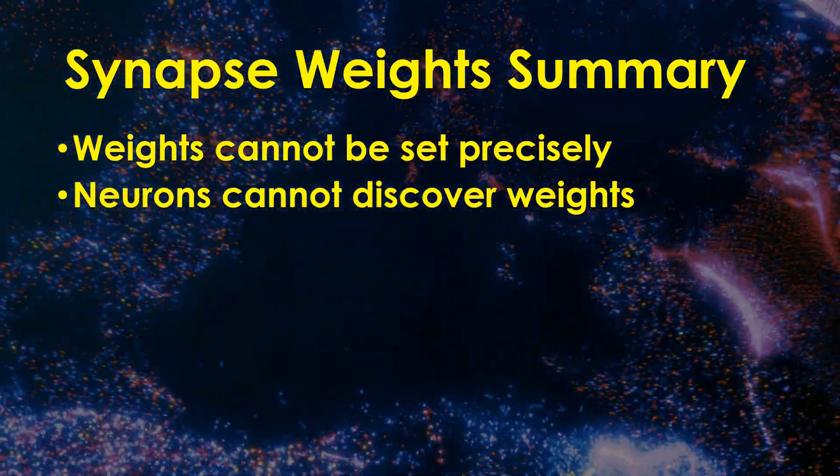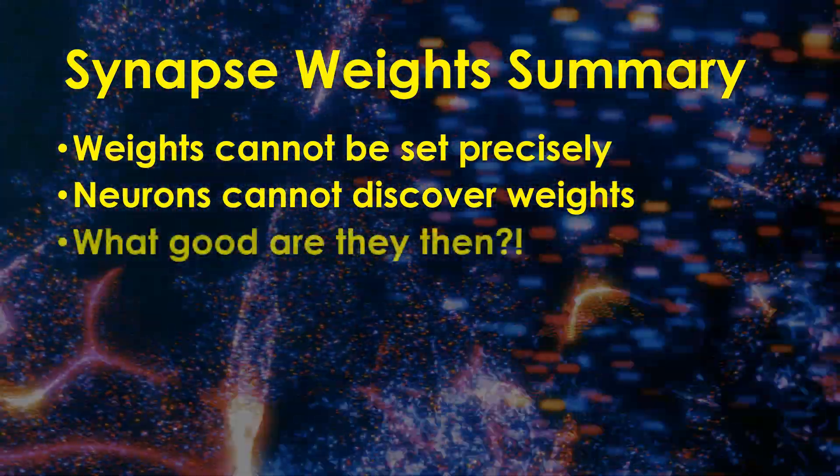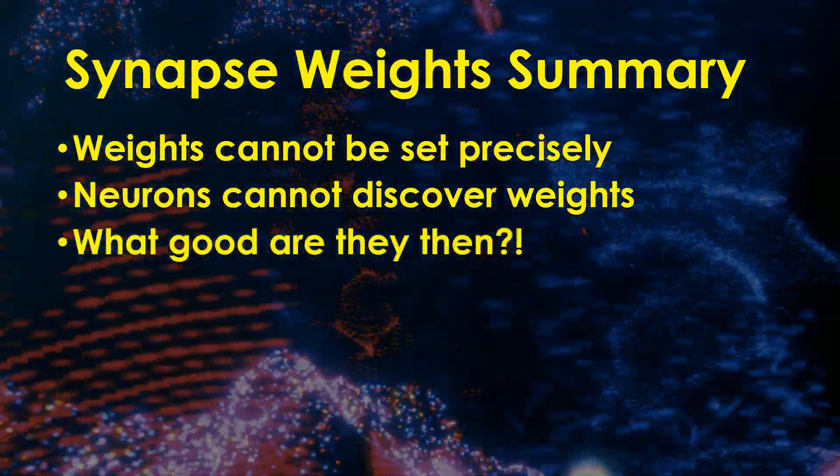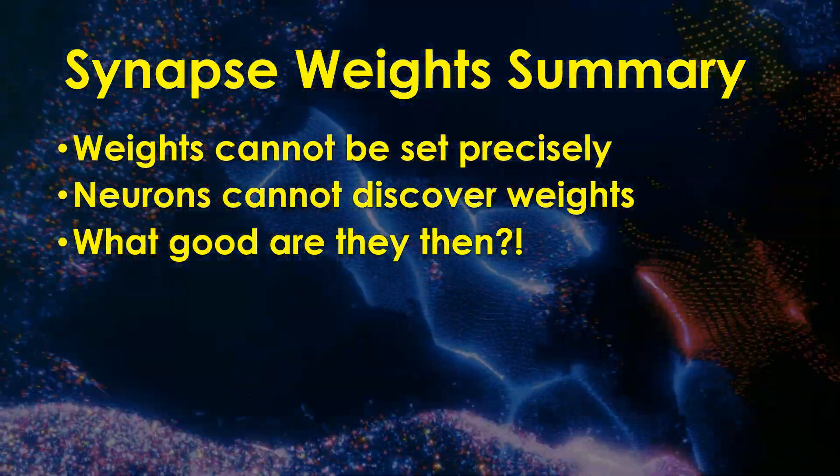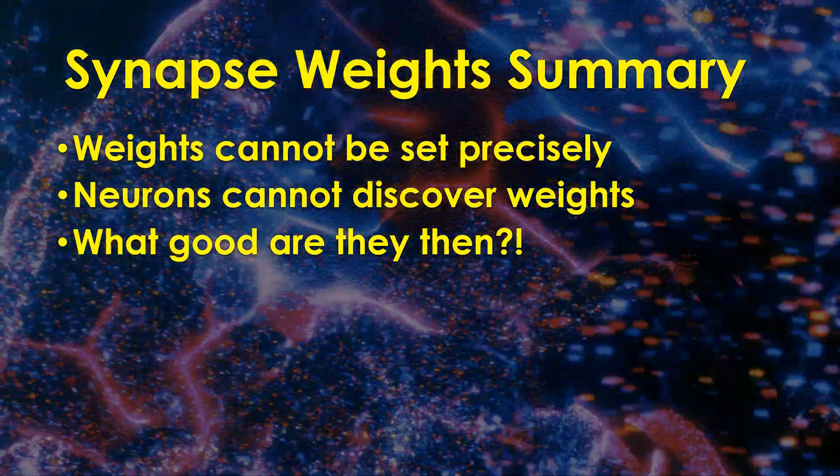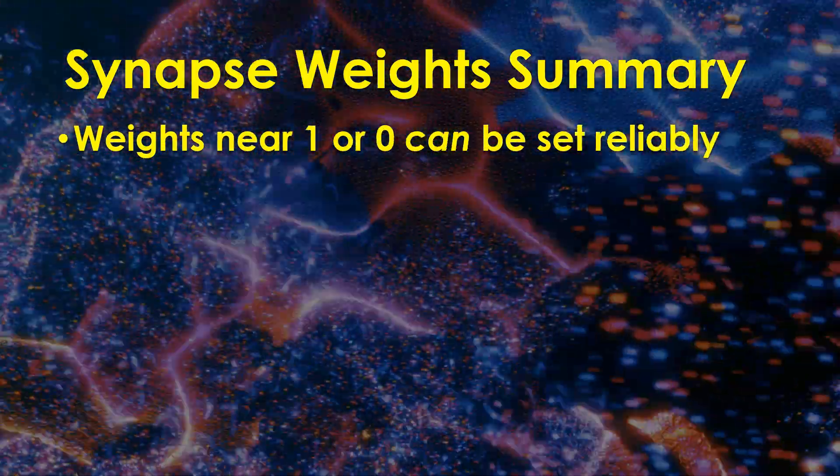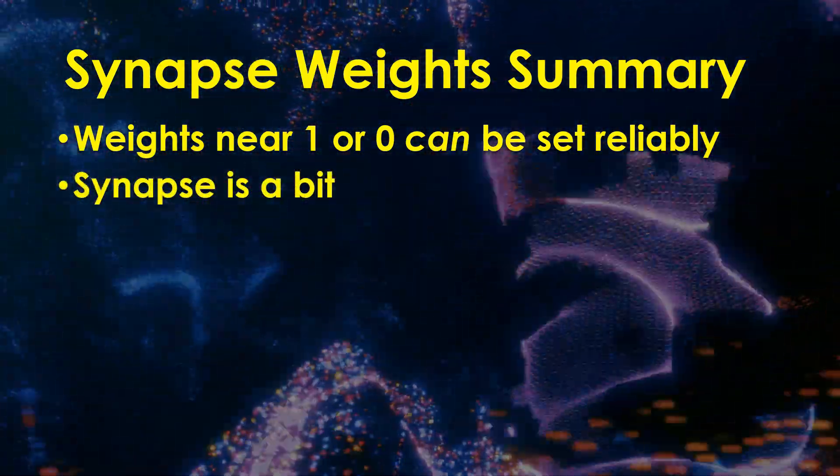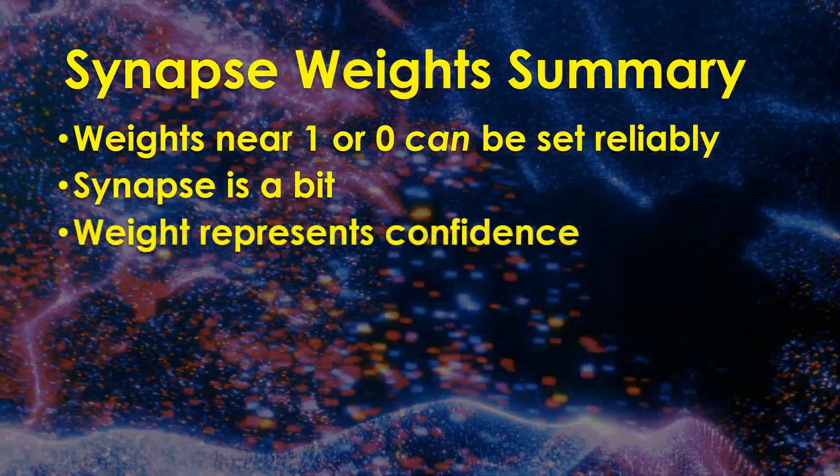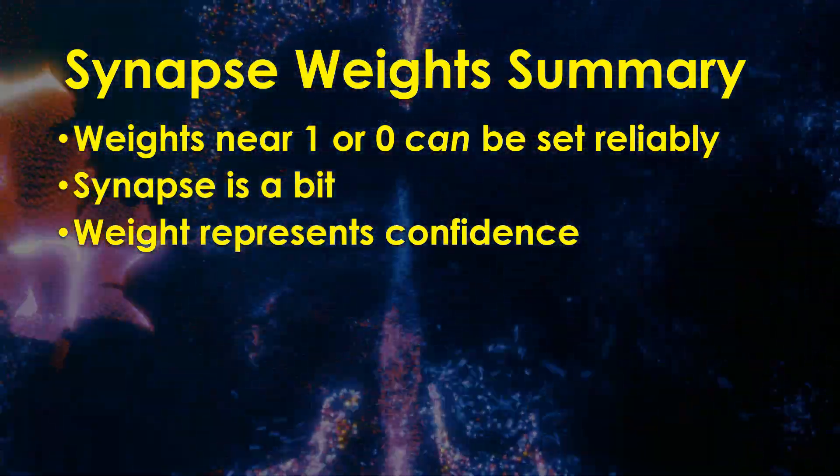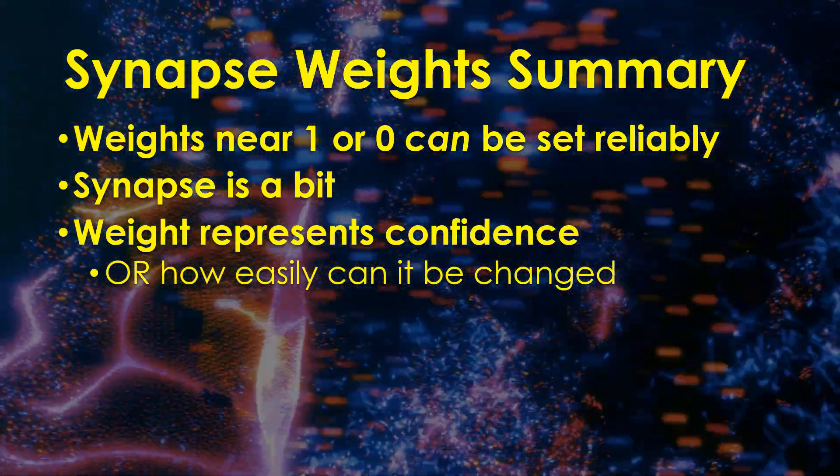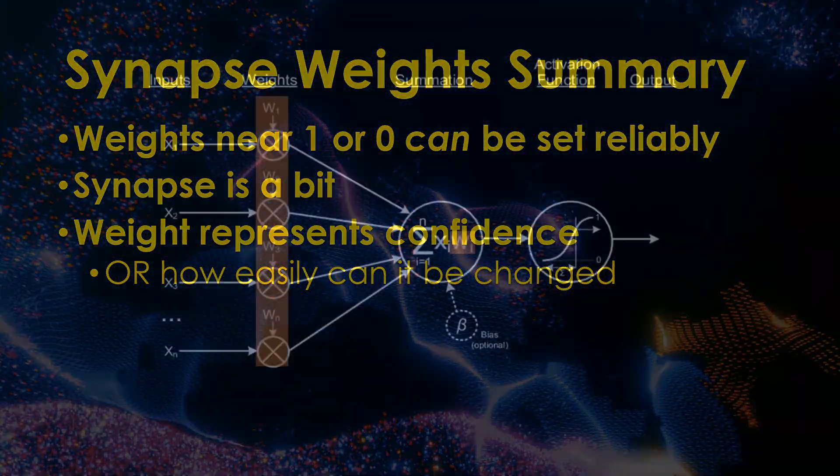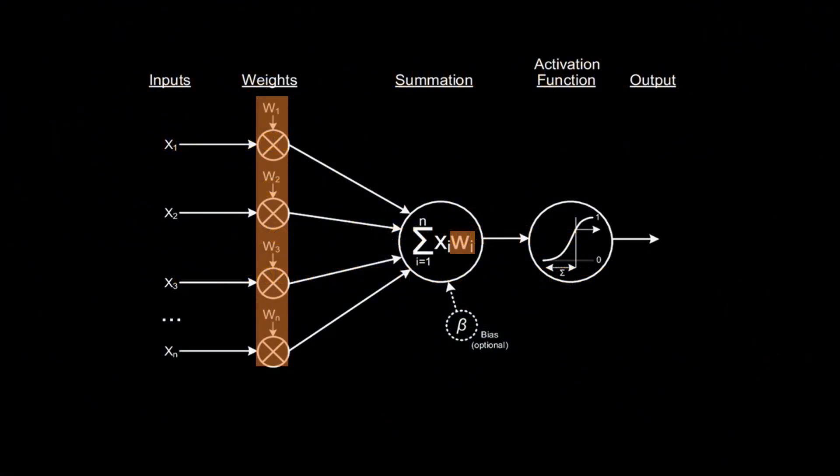So, if you can't store or read back synapse weights, what good are they? Well, synapse weights are not useless, far from it. They are just useless for storing precise values you want to read back. Instead, a synapse represents a single bit of information while the weight value represents the confidence that that bit is true. That is, how easily it can be changed. Once again, looking at the fundamental neural network formula, notice how it relies on the idea of precise synapse weights.